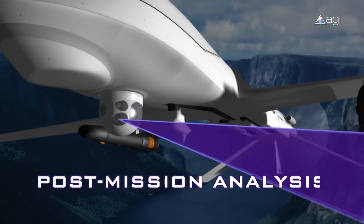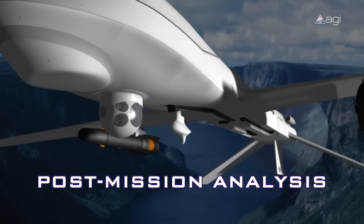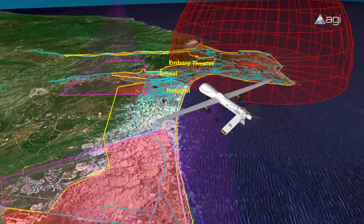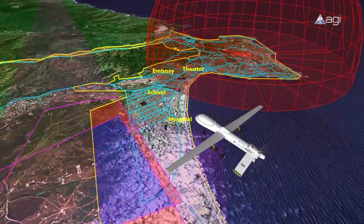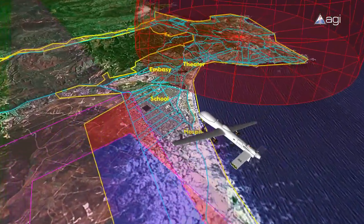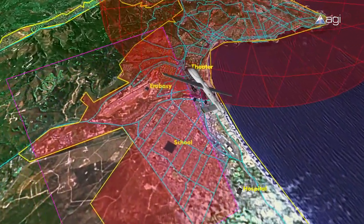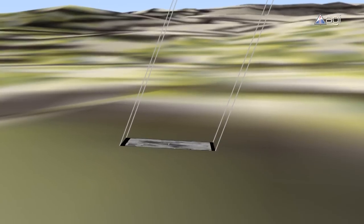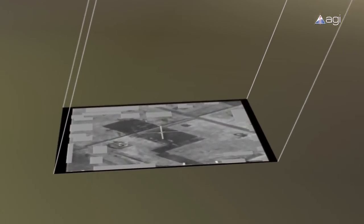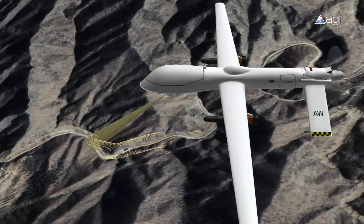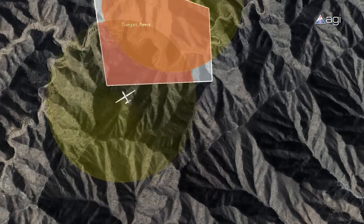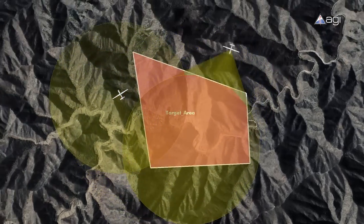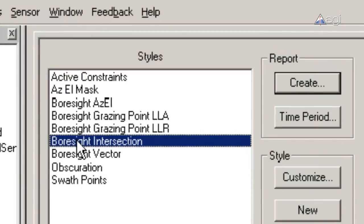Post-Mission Analysis. At the conclusion of an operation, AGI's technology is used to examine Predator missions by providing analysts with the ability to recreate flight paths from recorded data. Assess overall mission success by fusing battle damage assessment video with imagery and accurate 3D elevation data. Examine sensor footprints and swaths. And analyze dynamic coverage layers.